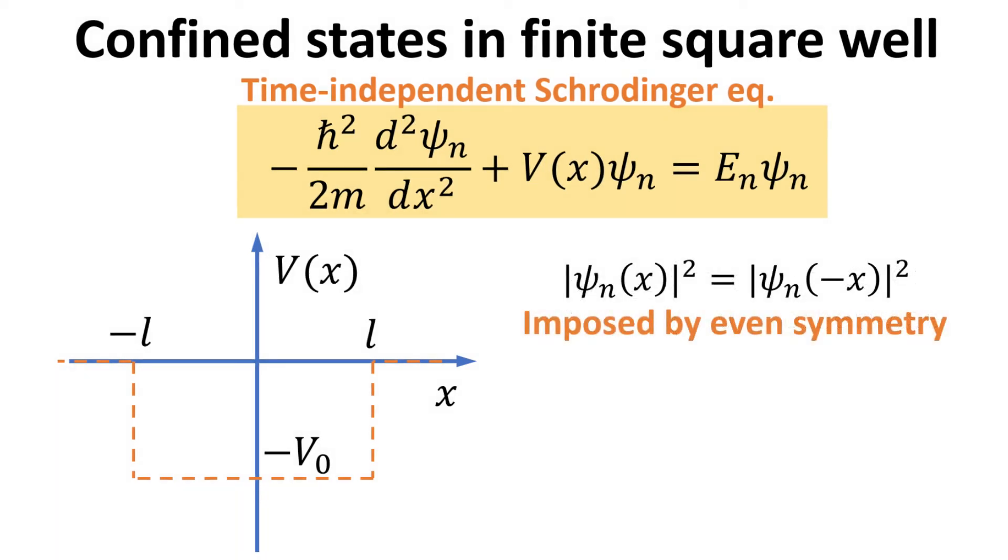In addition, note that the problem is symmetric with respect to x. Thus, the probability, which is an observable of the problem and given by the modulus square of the wavefunction, must respect this even symmetry.